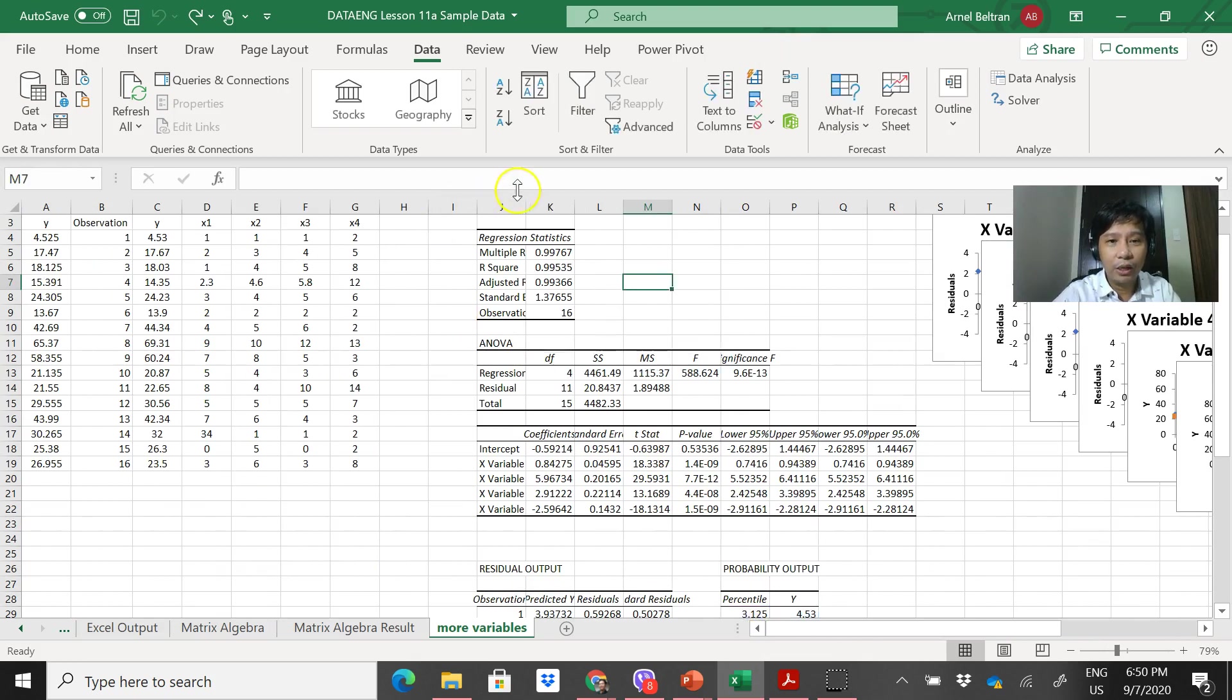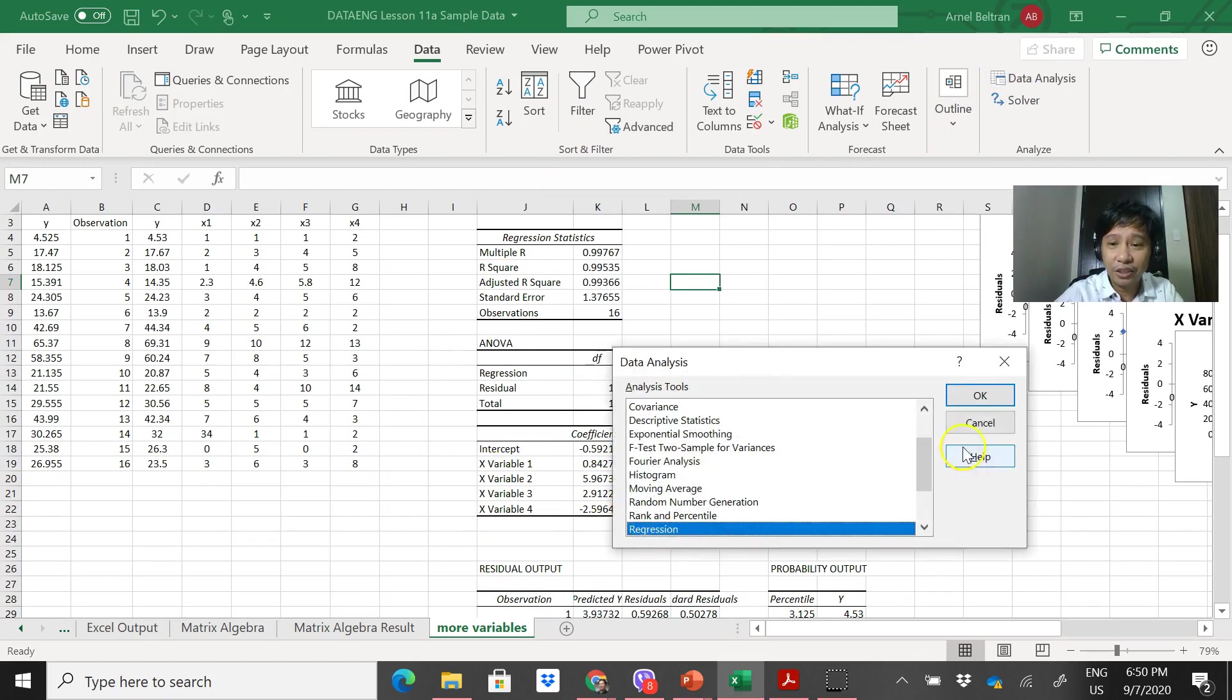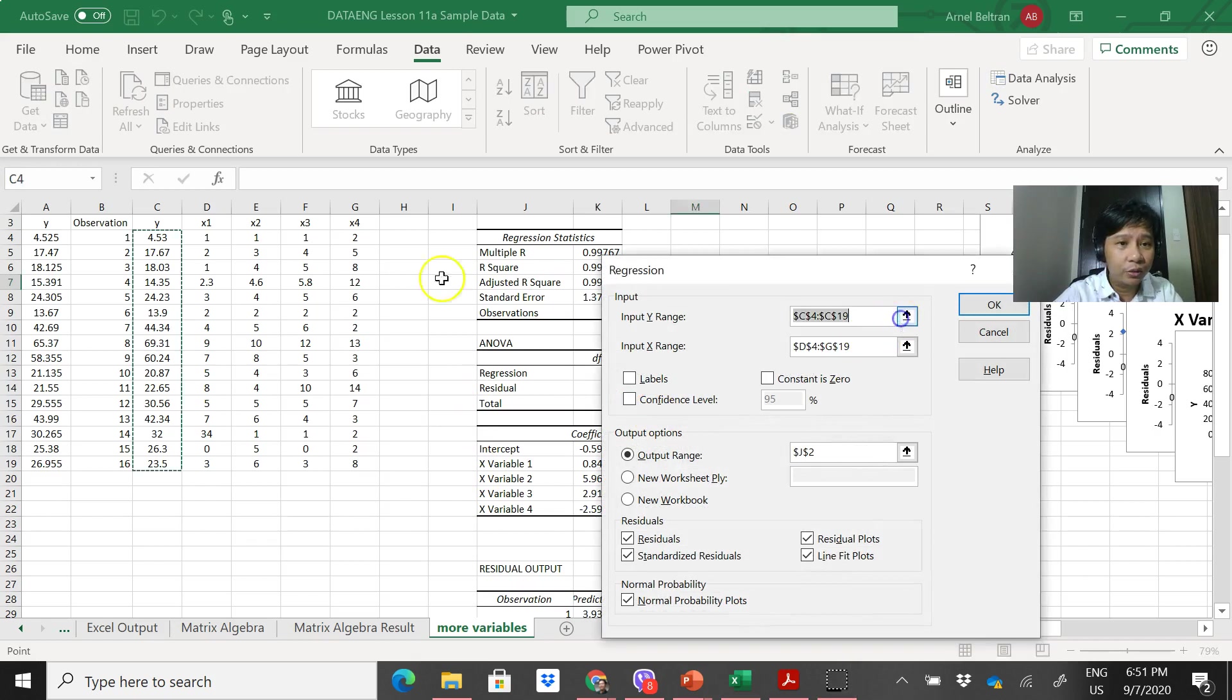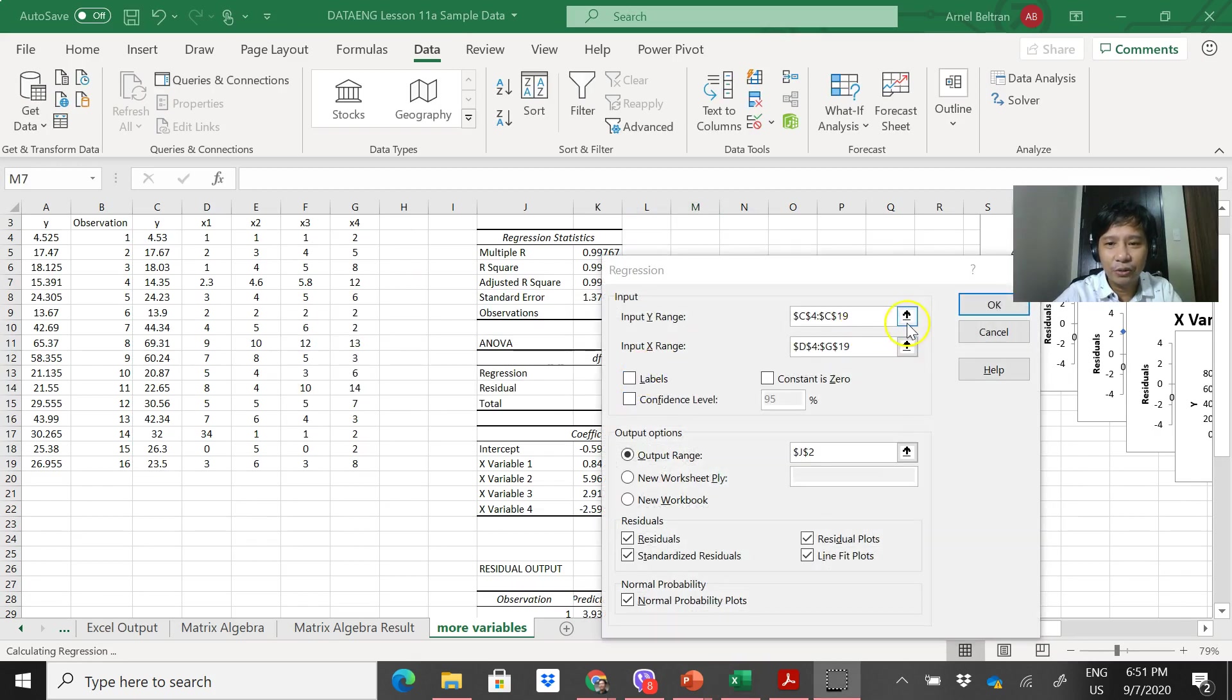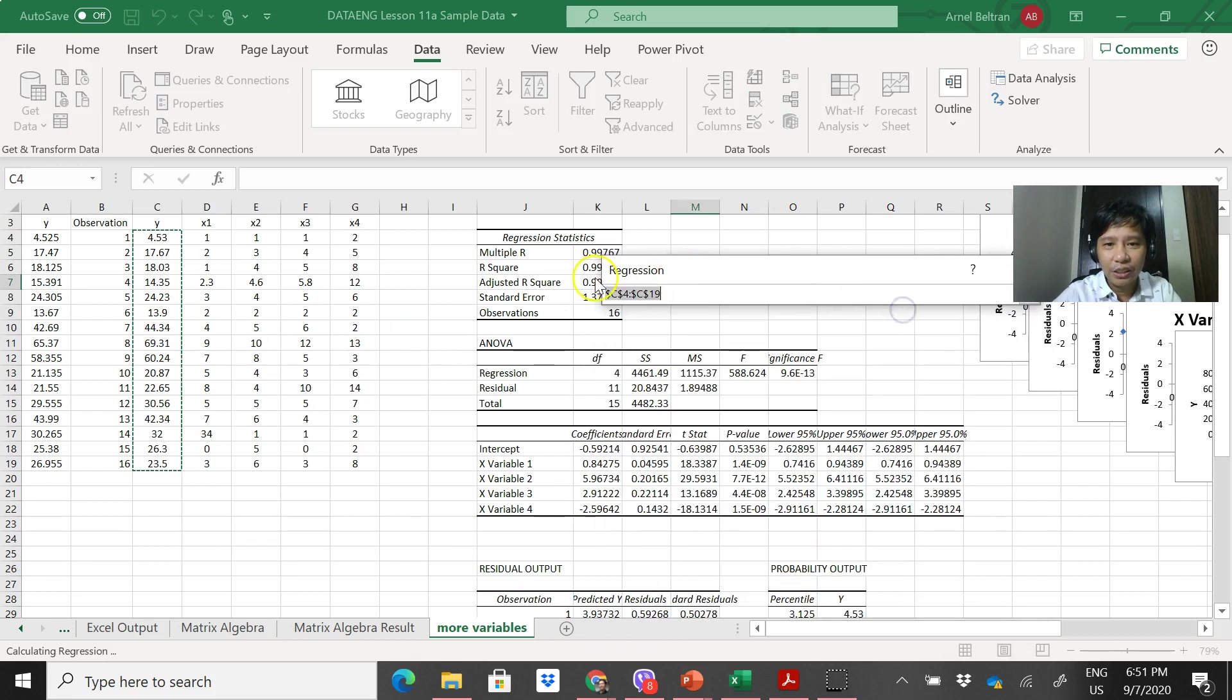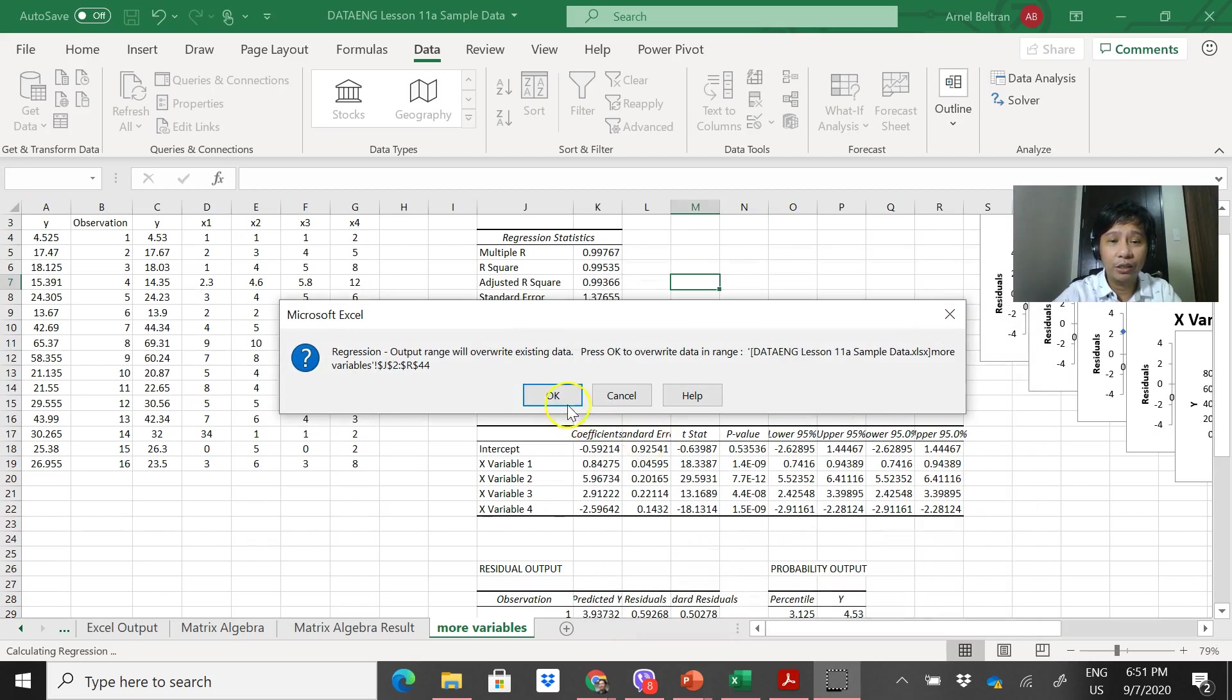Then you get your values for y. So these are the values of our y. Let me repeat. So Data, Regression. This is the y - this is the y. This is the x - you need to get all the variables, same with confidence interval. Output range, so that's it. Click all of this, then OK. It will just overlap. OK.